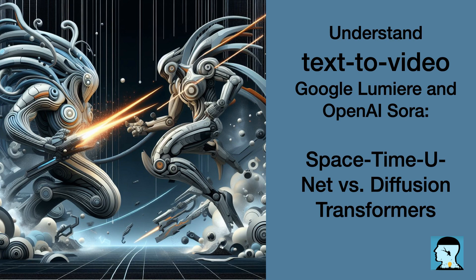Understanding the fundamental mechanisms behind Lumiere and Sora, particularly focusing on space-time unit and diffusion transformers, was motivated by the need to uncover the innovative technology driving these AI models. By diving into these mechanisms, we aimed to comprehend how these models generate videos from text descriptions and images. The space-time unit allows for flexible generation of videos in different sizes, durations, and resolutions, while diffusion transformers enable the transformation of noisy patches into coherent realities through a process akin to sculpting a statue from a marble block. These mechanisms play a crucial role in advancing AI capabilities and reshaping how we interact with visual media.